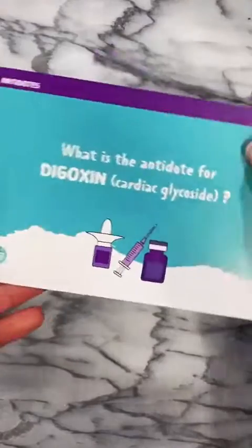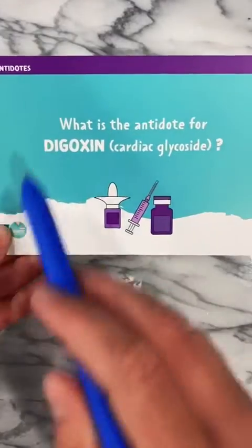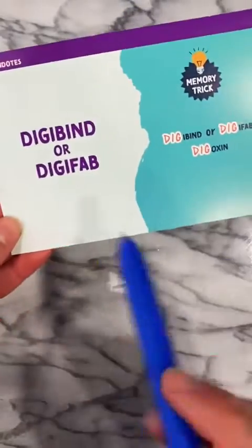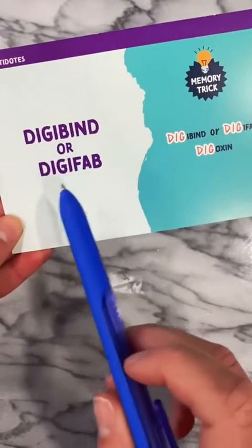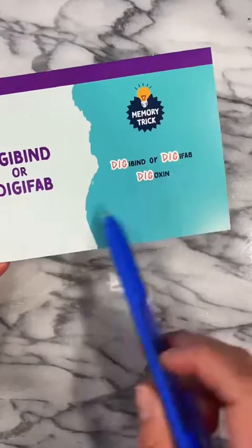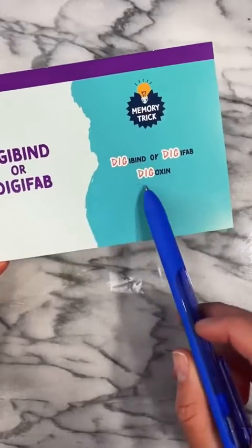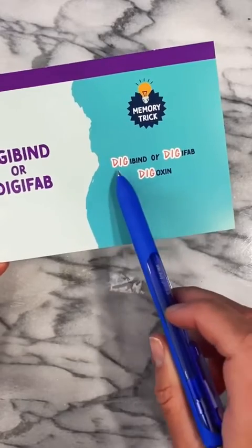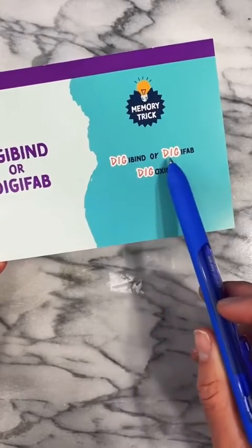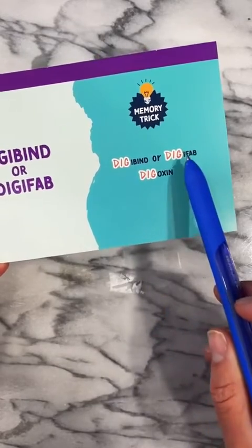And last but not least is digoxin. The antidote for digoxin is Digibind or DigiFab. The antidotes pretty much have digoxin in the name — Digibind or DigiFab.